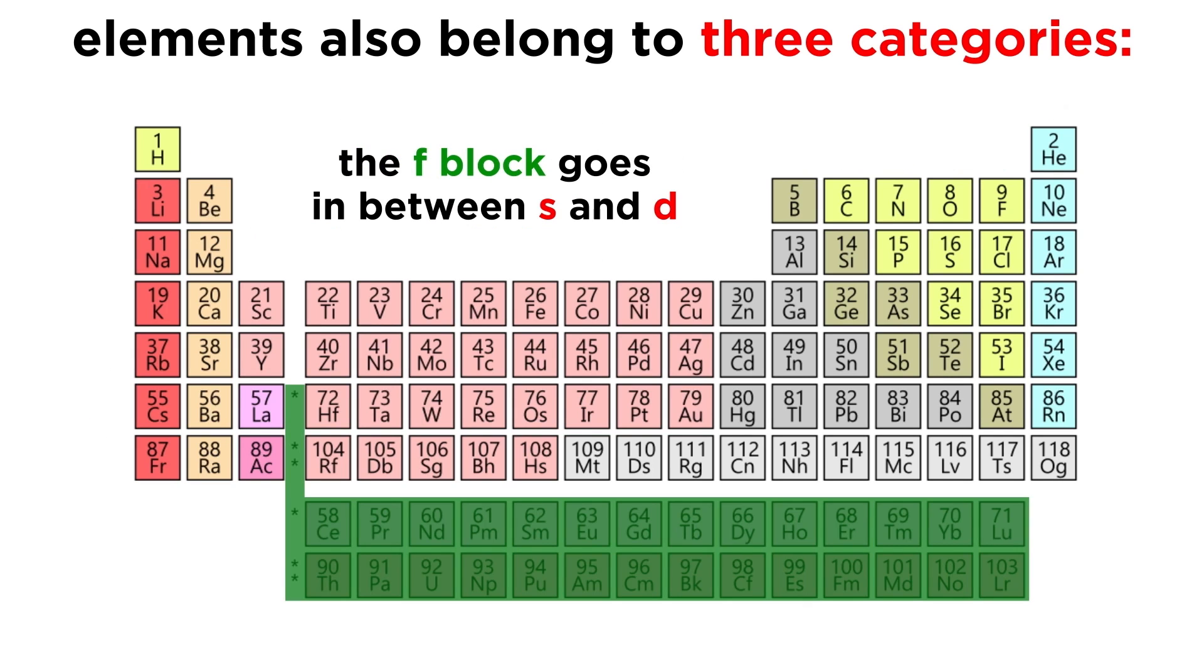In order to save space, a section of the table is removed and placed below the rest. These are the lanthanides and actinides, and they would technically belong in this area.